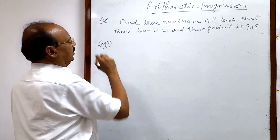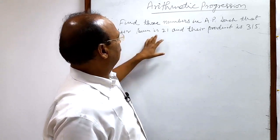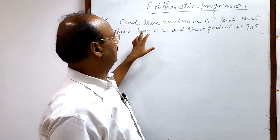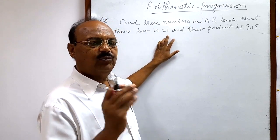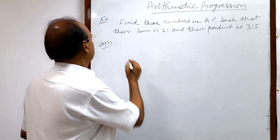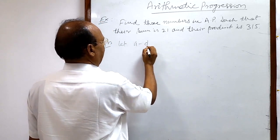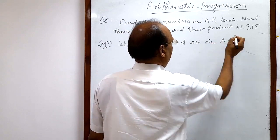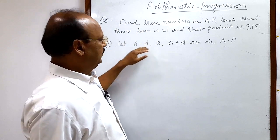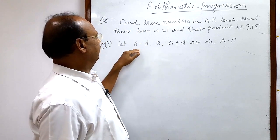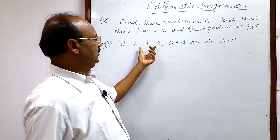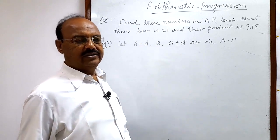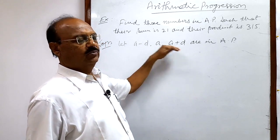Here we will apply a very simple tip. Whenever the sum of three numbers in AP is given, we should take the three numbers as a minus d, a, and a plus d. The difference between two consecutive terms is always constant, equal to d, which is known as the common difference. So these three numbers are definitely in AP.